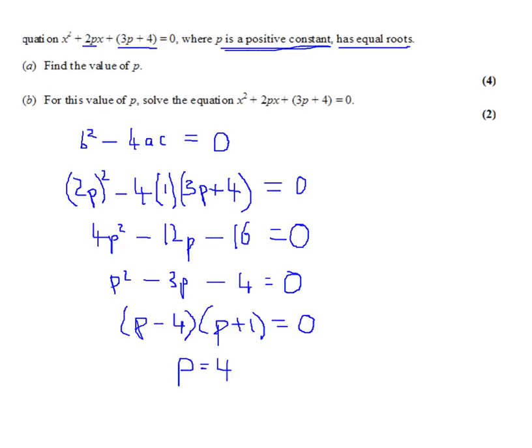Part B says solve this equation now. So basically, we put the value of p equals 4 in. We'll get the equation that we're trying to solve is x squared plus 8x. p is 4, remember, so x squared plus 8x. And if p is 4, this is 16. Plus 16 equals 0. And again, we should be able to factorize that easily.